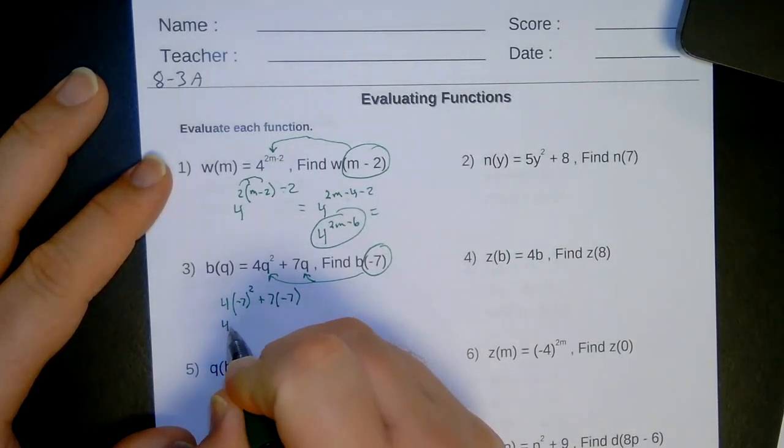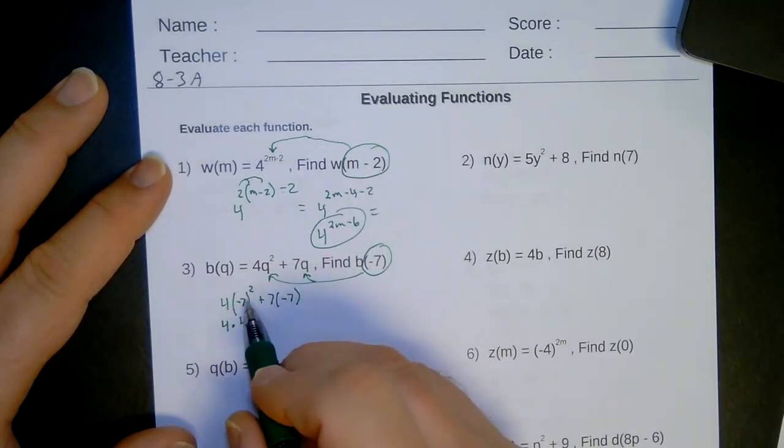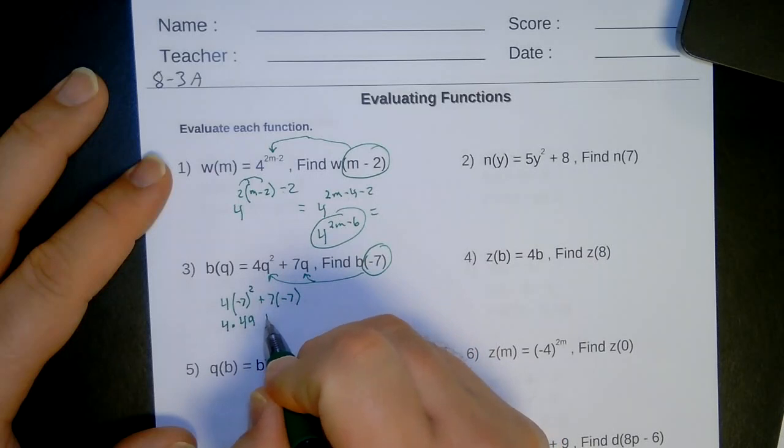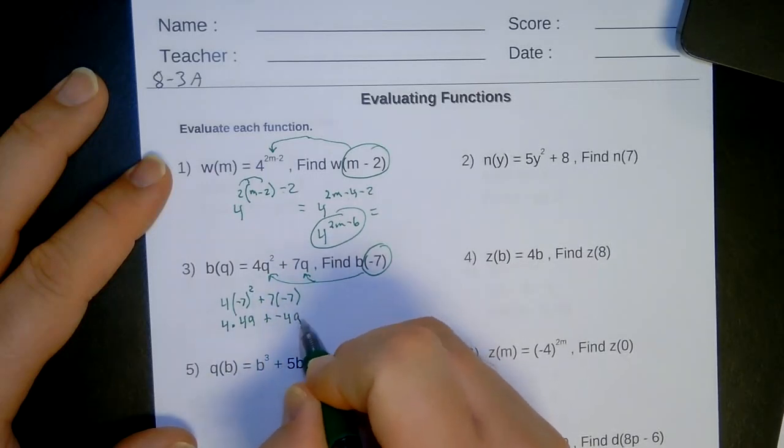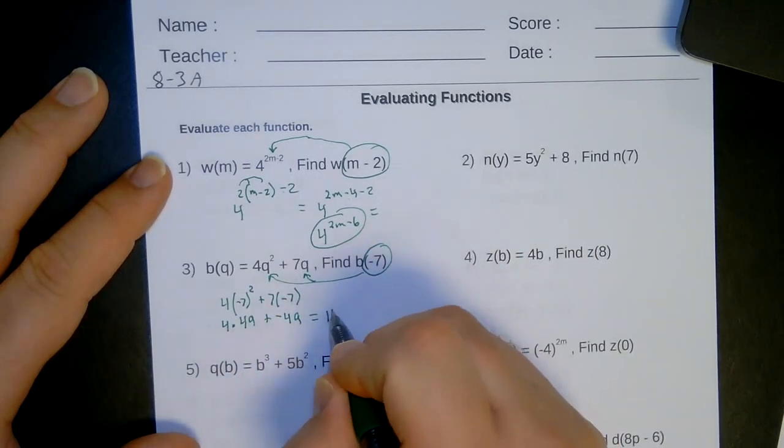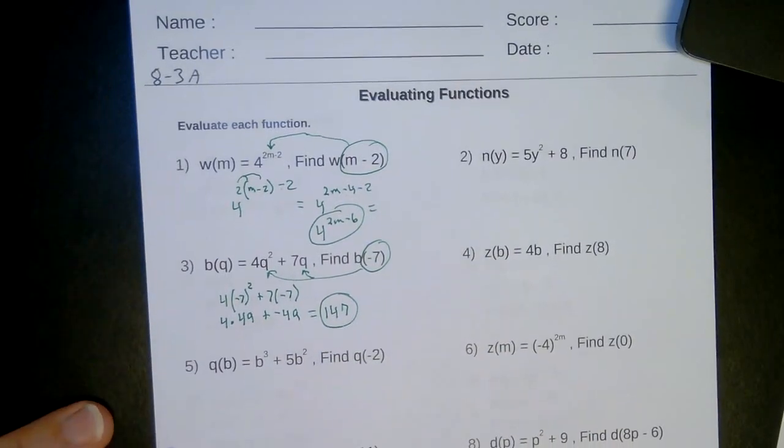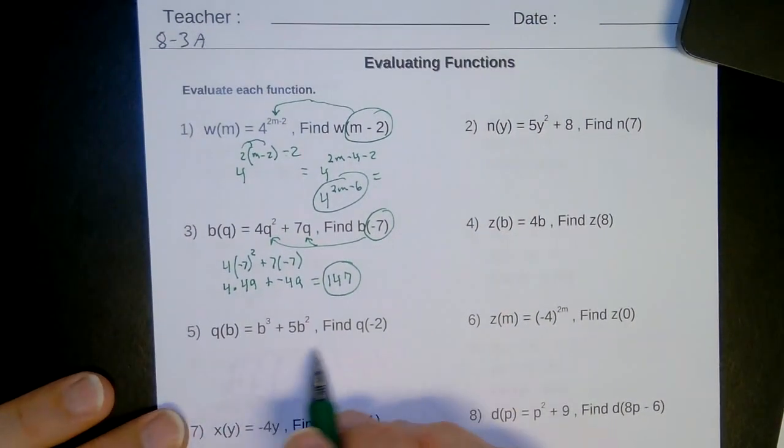So that's going to be 4 times 49. Negative times a negative is positive. Plus 7 times a negative 7 is negative 49. So you evaluate that on your calculator. So you should get 147. Okay? So hopefully these aren't so bad. Alright, next one.